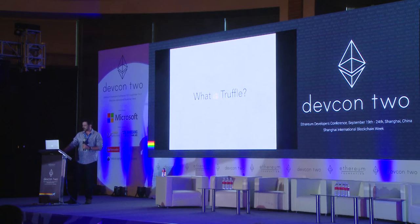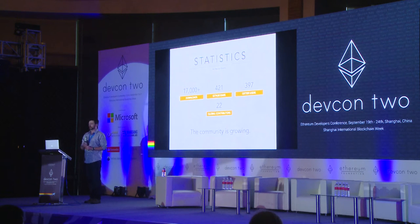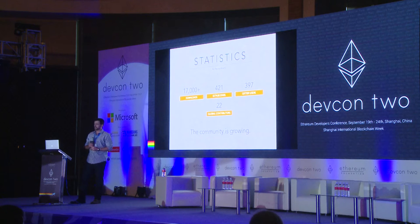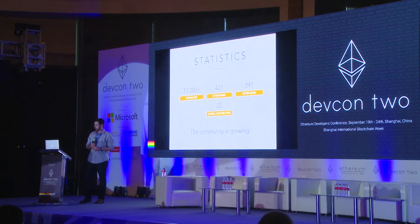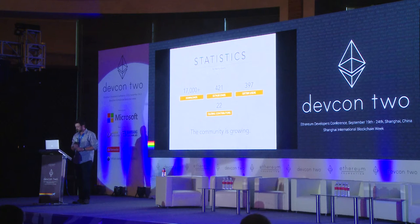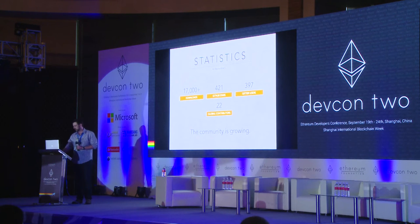What is Truffle? Truffle is the most widely used Ethereum development framework. To date we've had over 17,000 downloads. 15,000 of those were this year. 6,000 of those were in the last two months. 421 GitHub stars. We have 397 Gitter users. I have to thank every user on there for answering questions of everybody else that I can't get to. And so far we've had over 20 external global contributors.